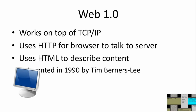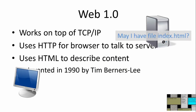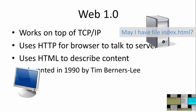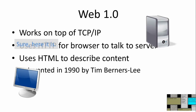A quick example: a browser makes an HTTP request to a server, basically saying 'May I have a particular file, such as index.html?' That message gets there via TCP/IP. The message is simply a request for a file, and the server responds: 'Sure, here it is,' sending the file back to the browser.